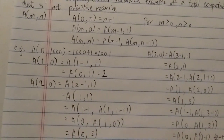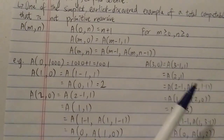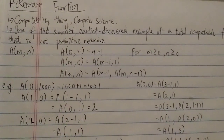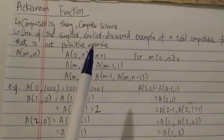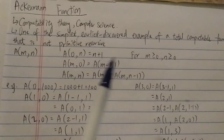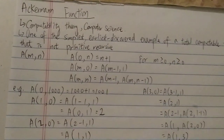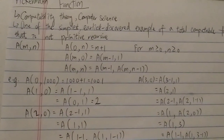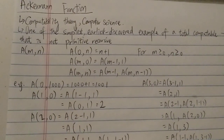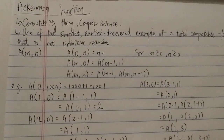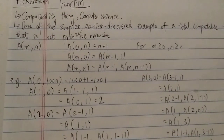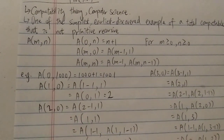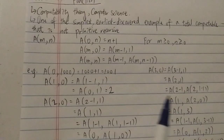We can quickly look at some examples of why this is such a fast-growing function. This function appeared way before Graham's number — way, way, way before — back in the 1920s or 1930s. That's one of the mind-blowing things about this computable function.